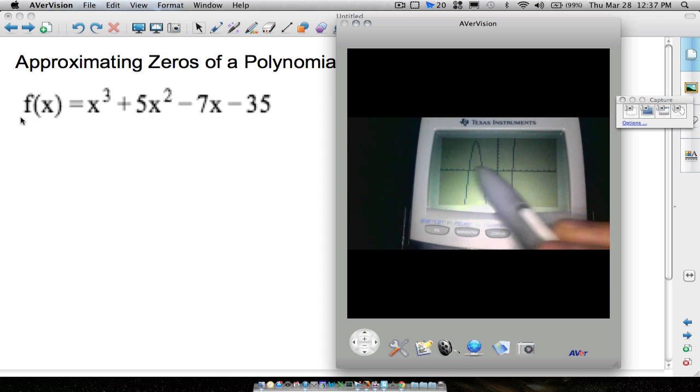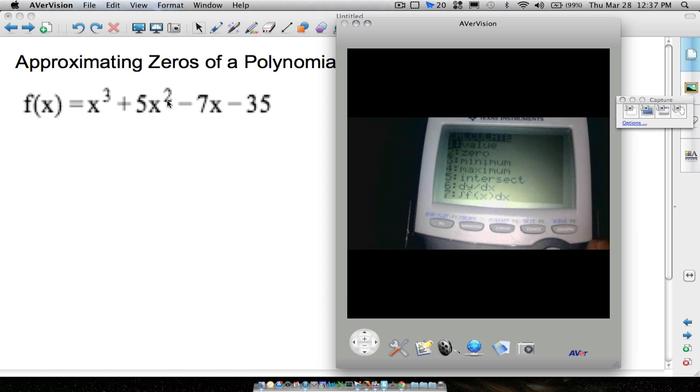The only thing I care about is that, that, and that. What are those values of x that make this function equal to zero? So to do that, we want to go to second trace and we want to go to zero.